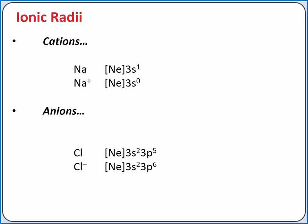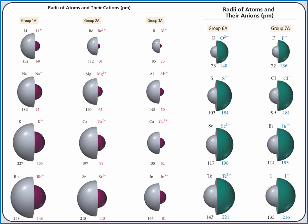Considering the size of ions, cations are smaller than their neutral atoms, and anions are larger than their neutral atoms. We can see this by comparing sizes of neutral atoms, cations, and anions of various elements.